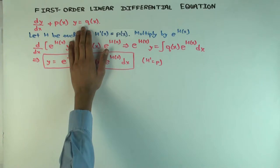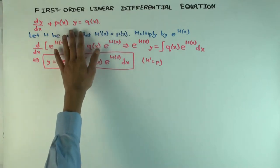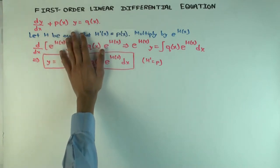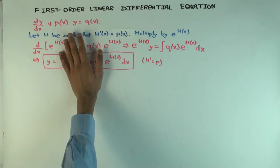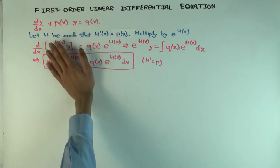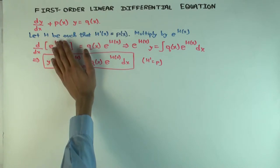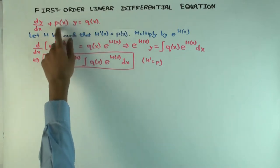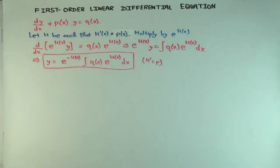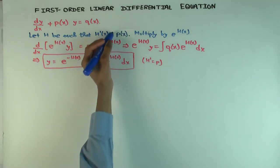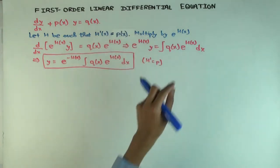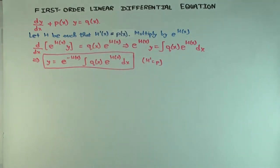There is a general solution strategy for first order linear differential equations — they can always be solved, meaning they can always be converted into integration problems. You find a function capital H whose derivative is p — that is, an antiderivative for the coefficient of y. Then you multiply both sides of the differential equation by e to the power of H(x).